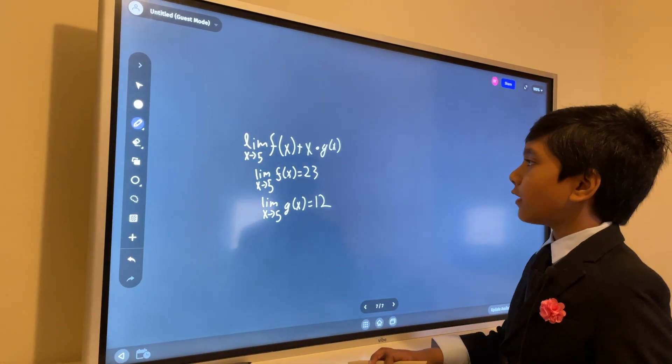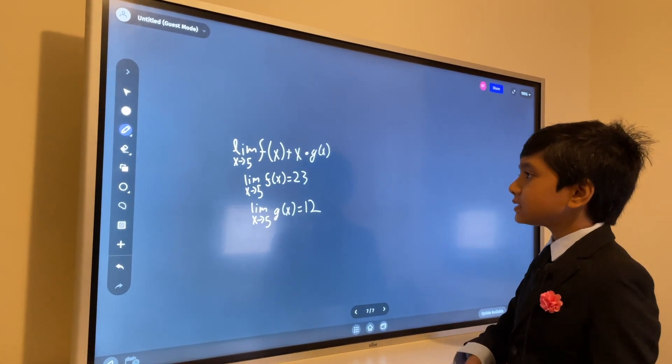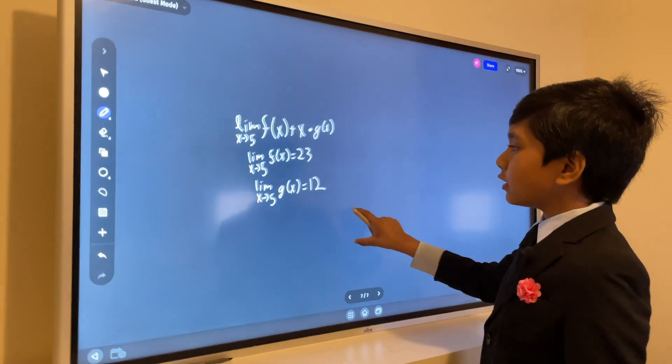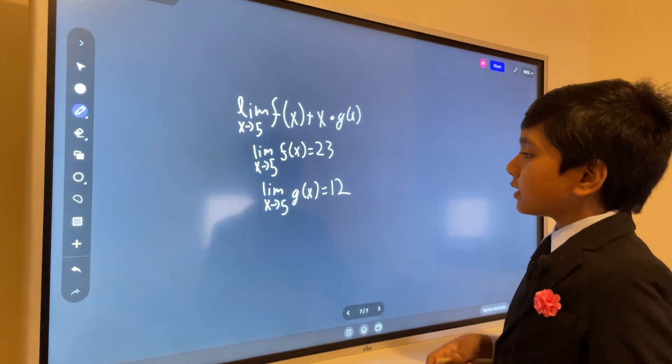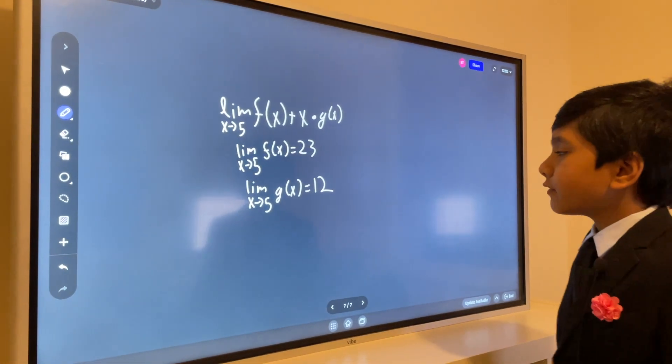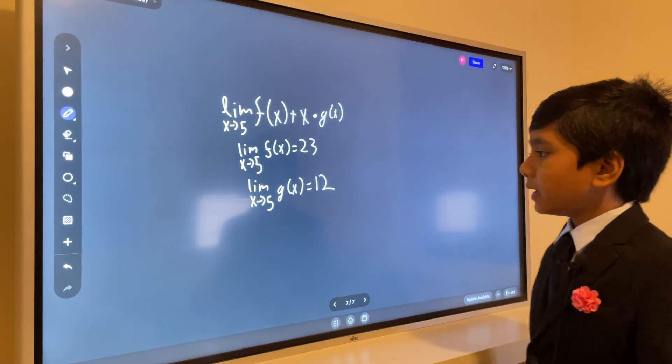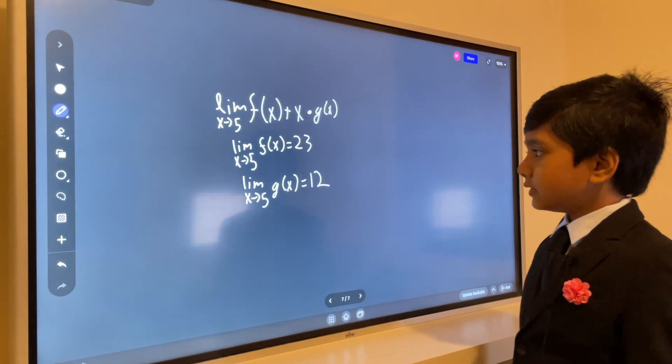So, the limit as x approaches 5 of f(x) plus x times g(x), and we know two things, two given. The limit as x approaches 5 of f(x) is 23, the limit as x approaches 5 of g(x) is 12.